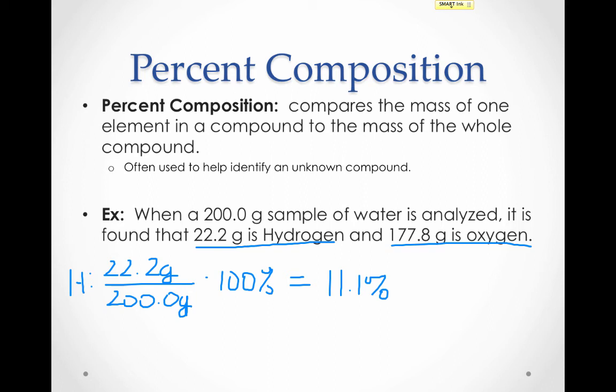Repeating this procedure for oxygen, we have 177.8 grams of oxygen for every 200 grams of water, or our unknown compound, excuse me. Multiply that by 100%, and you find that this compound is 88.9% oxygen. Of course, I've already given away the surprise here, but we can confirm that this compound is water, since we've already seen way back at the beginning of this video that water is always 11% hydrogen and 89% oxygen.